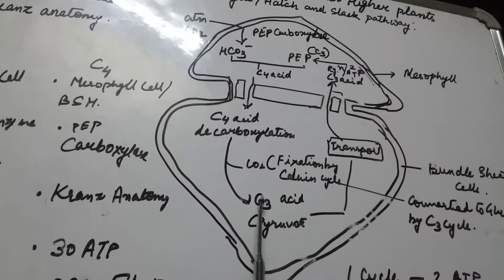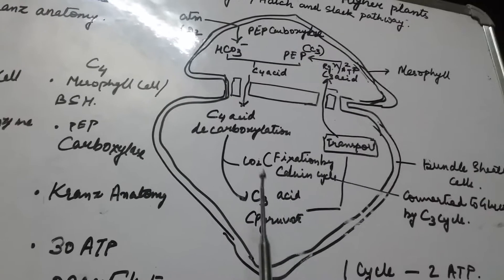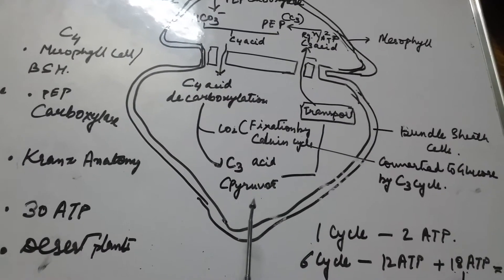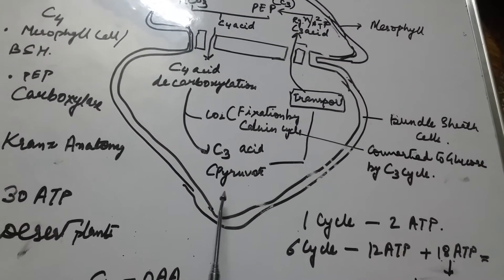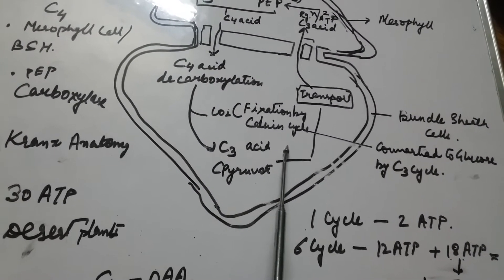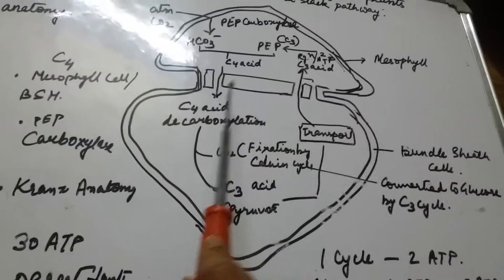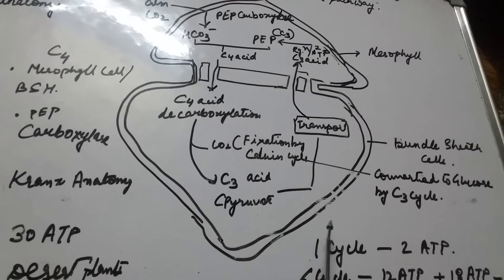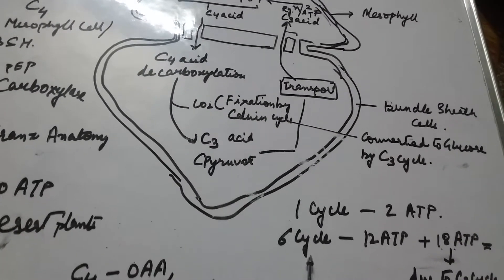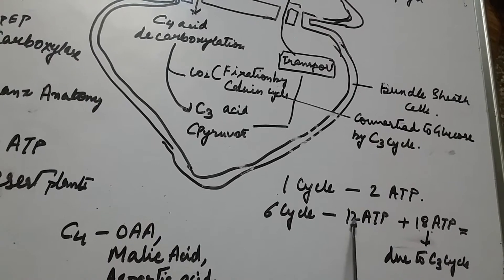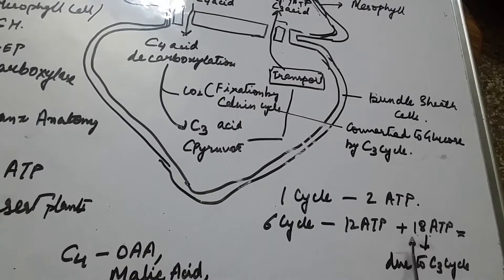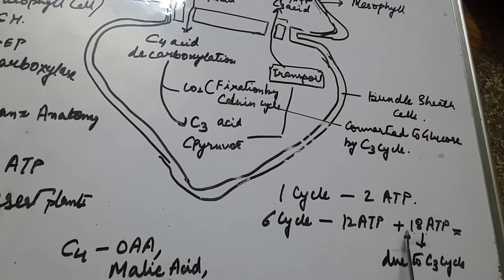This is an energy-efficient pathway. One cycle results in the formation of ATP at the mesophyll cells and additionally through the C3 cycle. Since six cycles are needed to produce one glucose molecule (C6), the cycle runs six times, utilizing 12 ATP from the mesophyll cell cycles and 18 ATP from the C3 cycle, totaling 30 ATP.